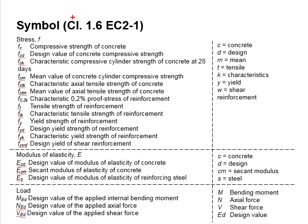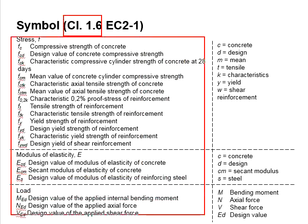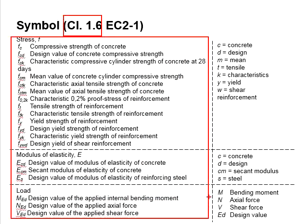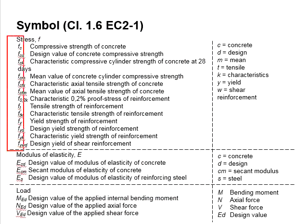In EuroCode 2, Clause 1.6, a list of symbols is given. These symbols are systematically coded in order to prevent confusion in adopting the relevant value in the equations.